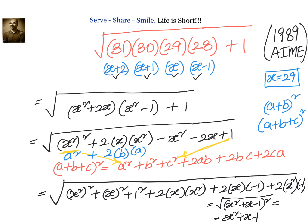We get our answer as x²+x−1. That is x(x+1)−1. Substituting x=29, we get 29 times 30 minus 1, which equals 869.